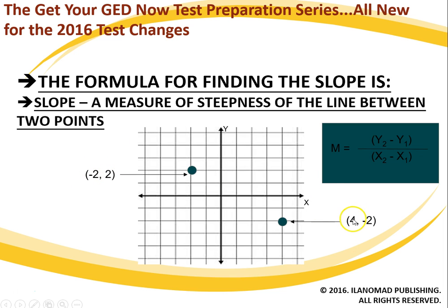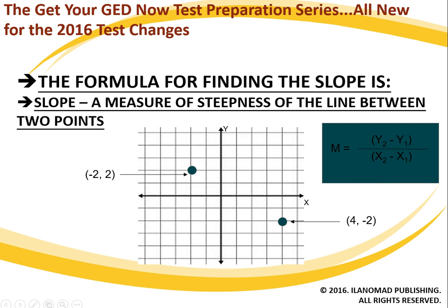If I choose this as my x2, then this is my x1. If I choose this as my y2, then this is my y1. Conversely, if I choose this as my y2, then this is my y1. If I choose this as my x2, then this is my x1. So it doesn't matter as long as you're consistent — if I choose this over here as my x1 or my x2, then I just have to treat the other ones accordingly.